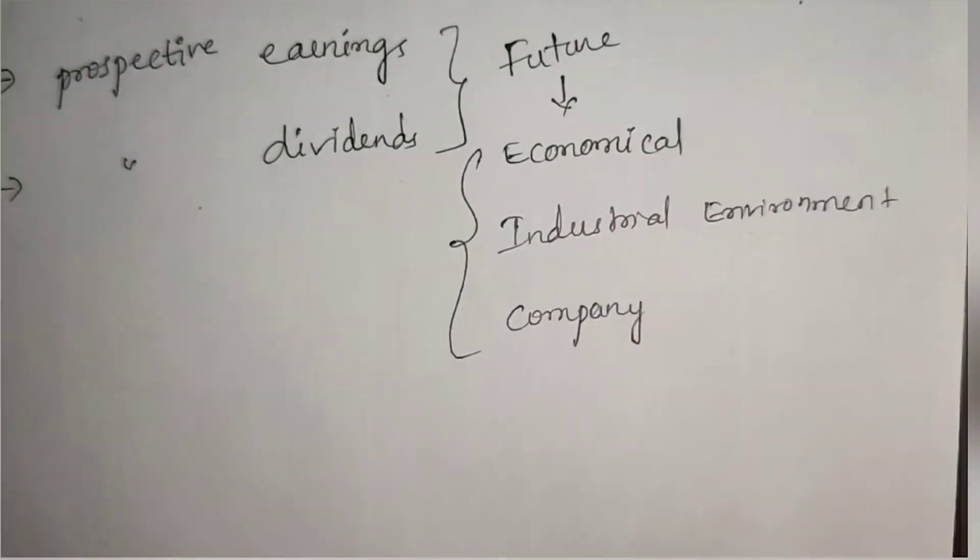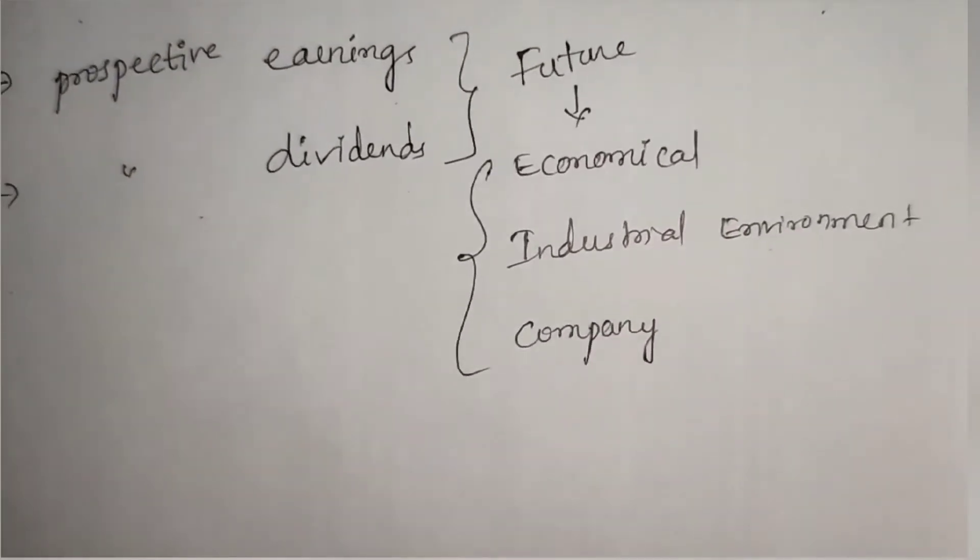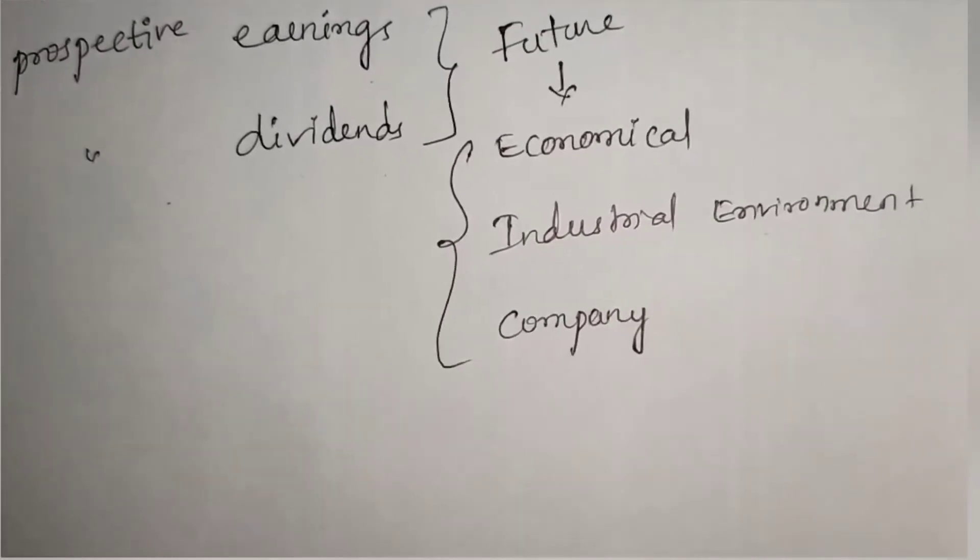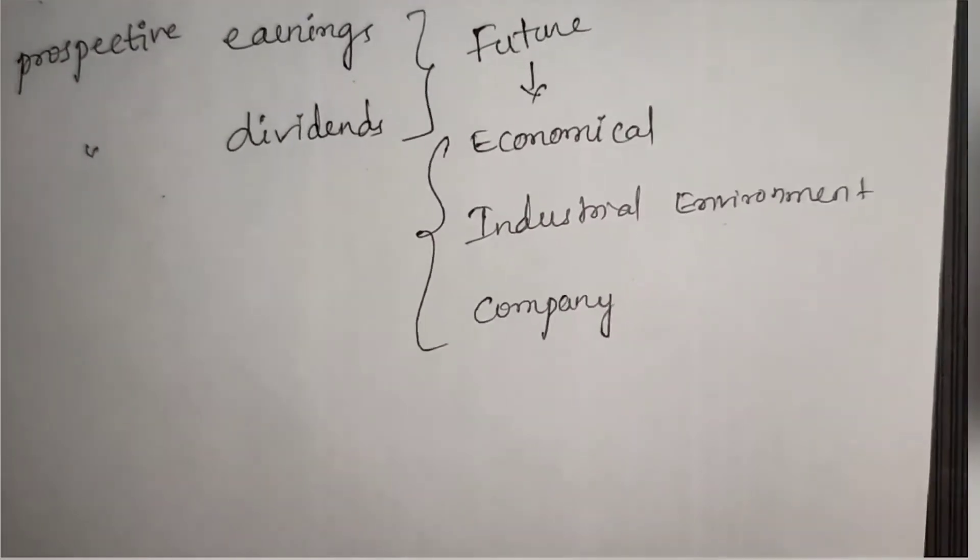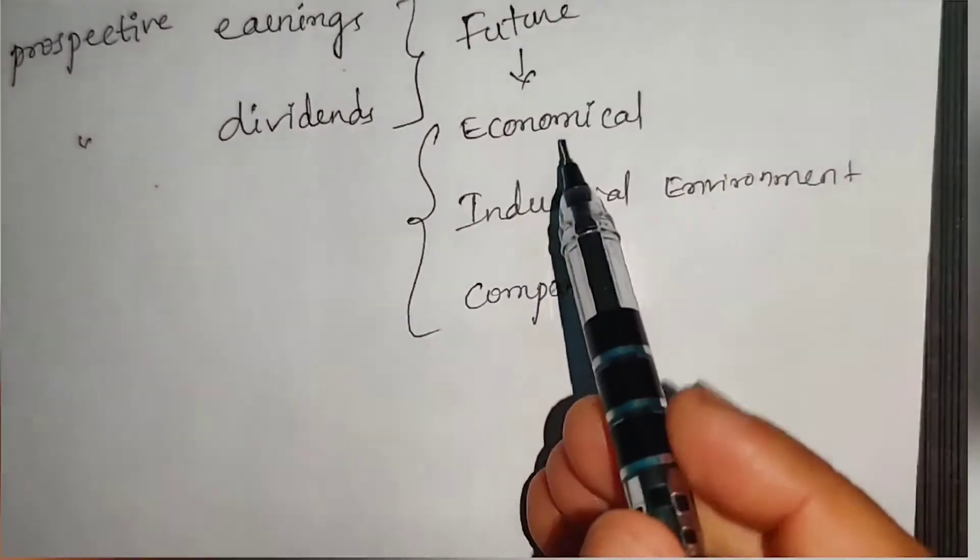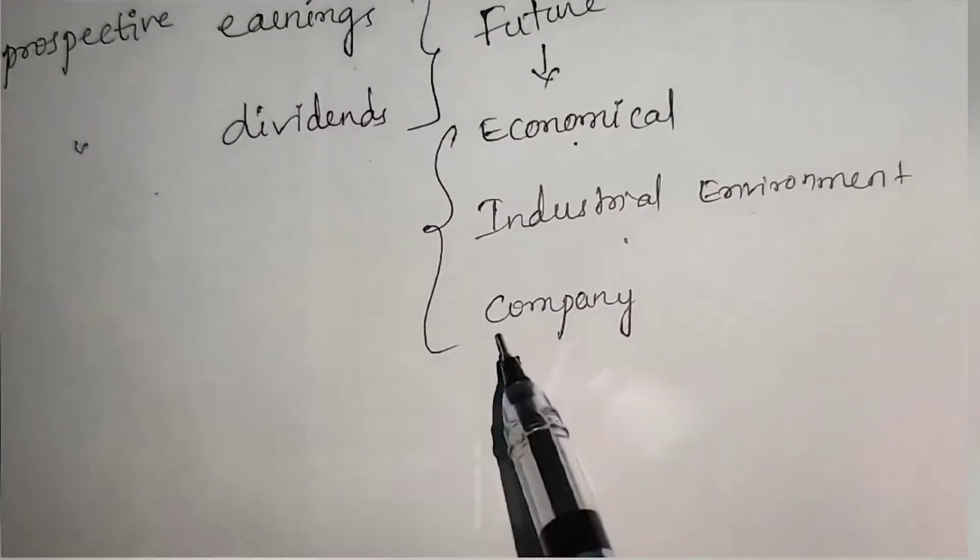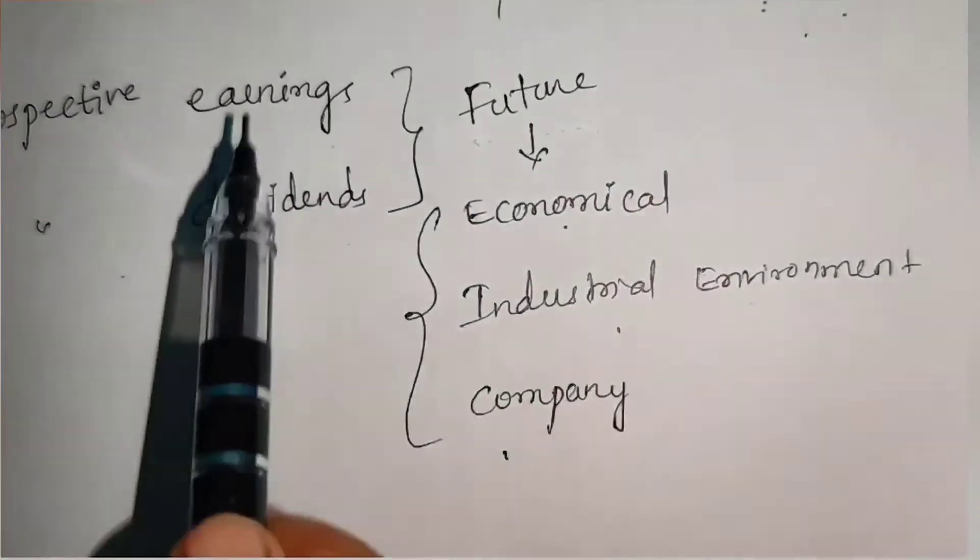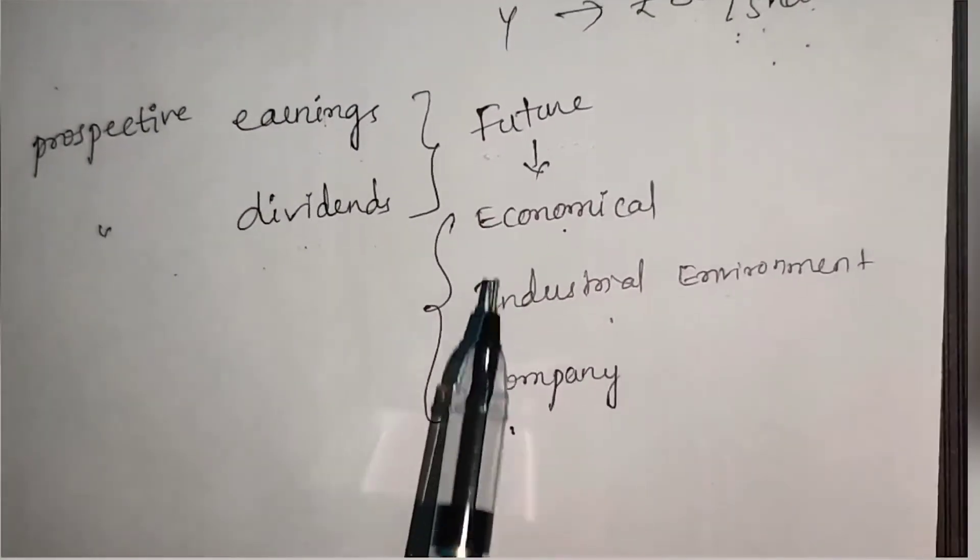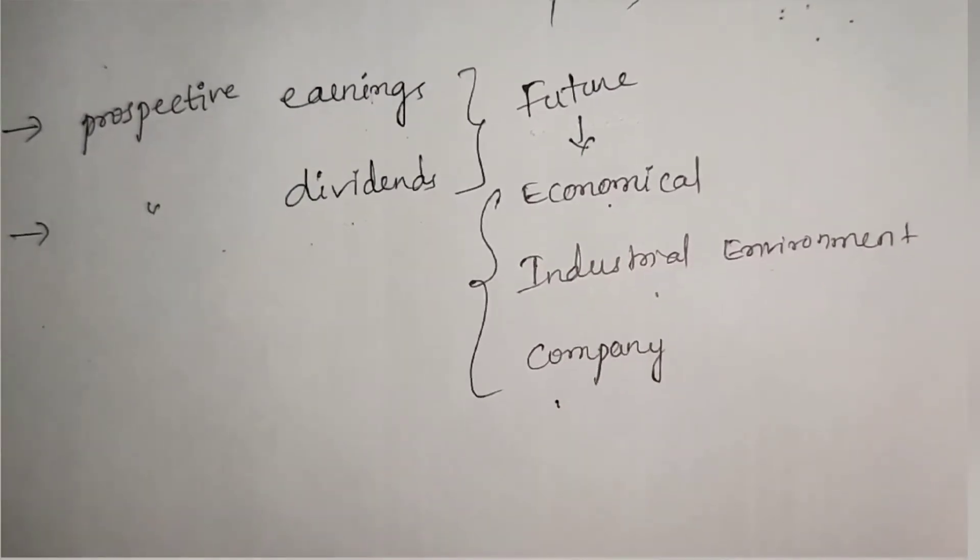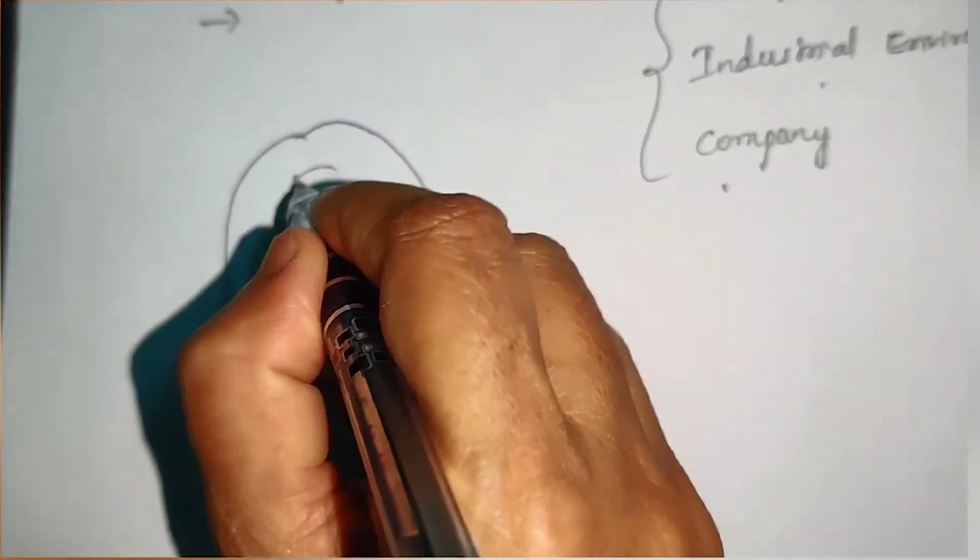This is giving an indication that whenever we start investing, we need to establish some quantitative relationships. Fundamental analysis seeks to establish quantitative relationship between economic, industry, and company factors in order to forecast earnings and dividends. For that we will do quantitative analysis of all these three, and this can be done in two ways.